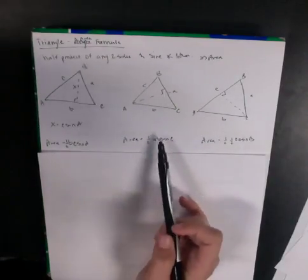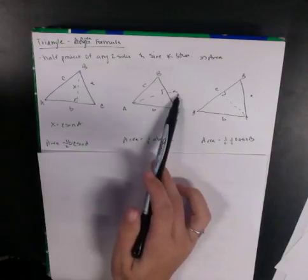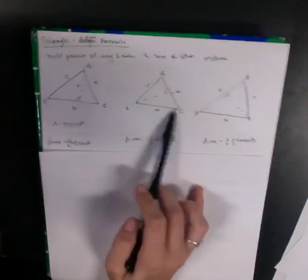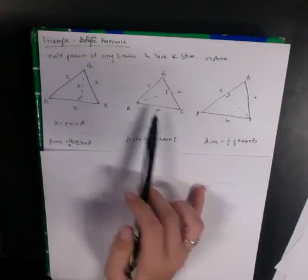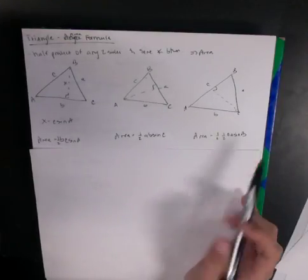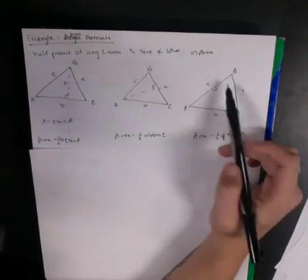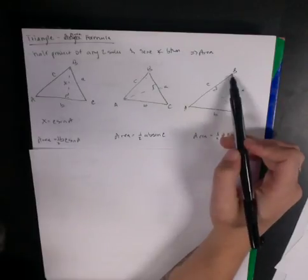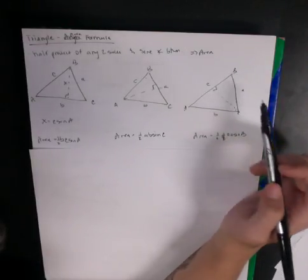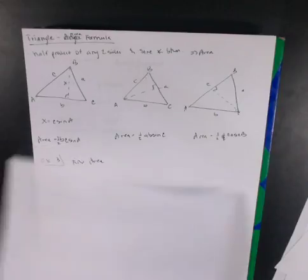Similarly, the area equals one half times side A times side B times sine of C — the angle in between those two sides. Or one half times C times A times sine of B, the angle in between. So let's do an example.